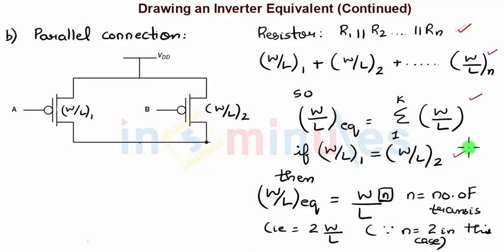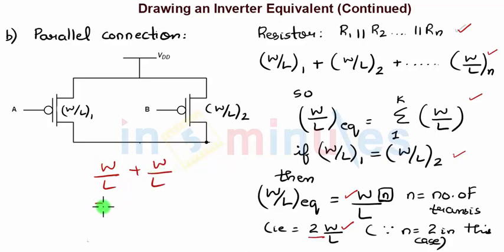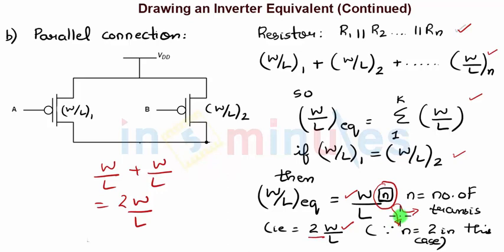W/L + W/L equals 2 times W/L. This leads to a general formula: if all W/L values are the same and the transistors are connected in parallel, you get W/L multiplied by n, where n is the number of transistors. In this case n equals 2. So remember these series and parallel laws for transistors — we can also prove them using layouts, but that is currently beyond the scope of our work.